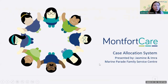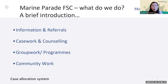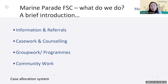Marine Parade FSC is under the larger umbrella of Montfort Care. In Montfort Care, we have other centers such as Big Love Specialty Center, Good Life SAC, and two other FSCs — Crater Ayer FSC and AD27. As we speak, our two other sister FSCs — KA FSC and AD27 — are also embarking on this journey of adopting the case allocation system. Marine Parade FSC did the pilot run, so we are here to share our journey, challenges, and benefits.